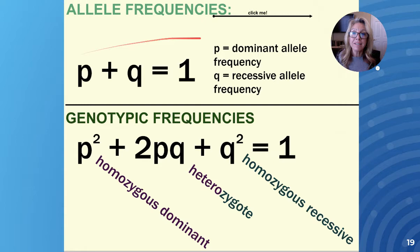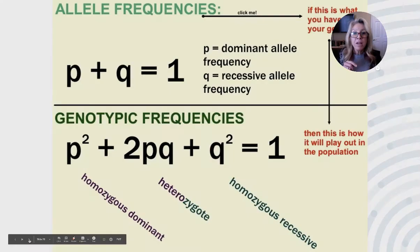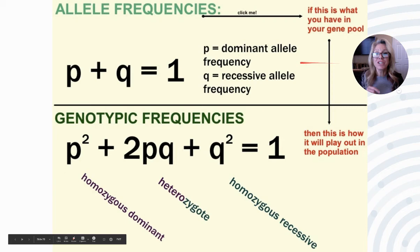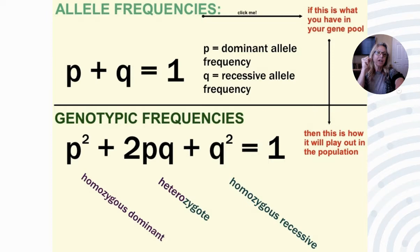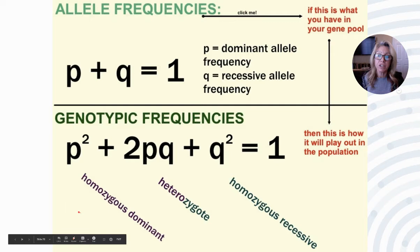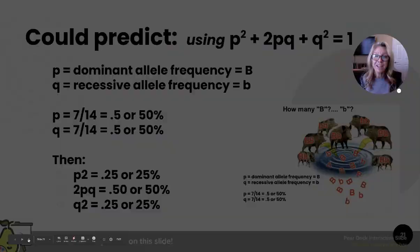These two equations direct how we analyze allele frequencies mathematically. The first is P + Q = 1 — that's your gene pool. The second is P² + 2PQ + Q² = 1 — these are the genotypic frequencies of the members of your population. If you reach into the gene pool with a 50% chance of getting P, and reach in again with another 50% chance, P² would be 0.5 × 0.5 = 25% chance of getting homozygous dominant. That's your product rule.